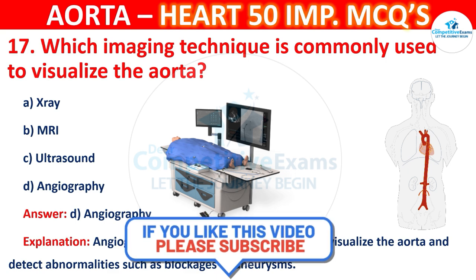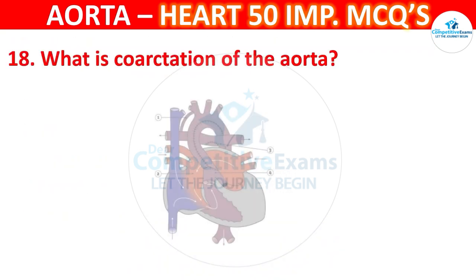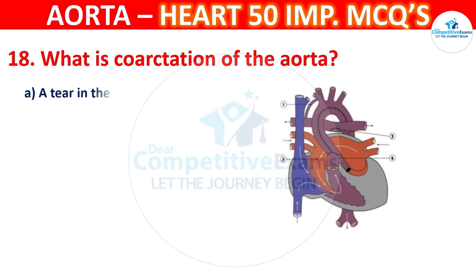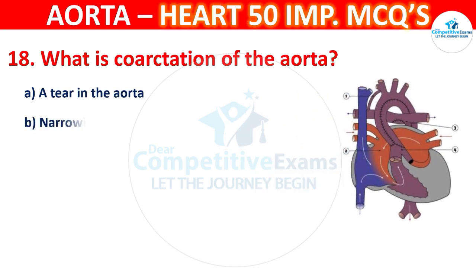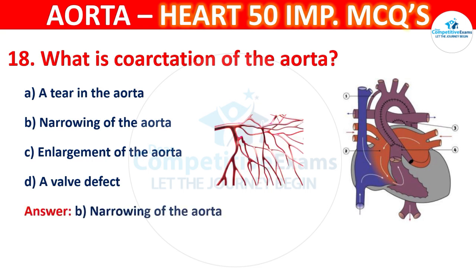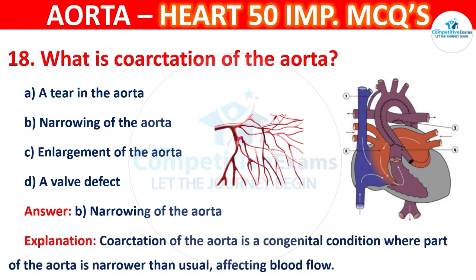Question number 18: What is coarctation of the aorta? Options are a tear in the aorta, narrowing of the aorta, enlargement of the aorta, or a wall defect. The correct answer is B — narrowing of the aorta. Coarctation of the aorta is a congenital condition where part of the aorta is narrower than usual, affecting blood flow.